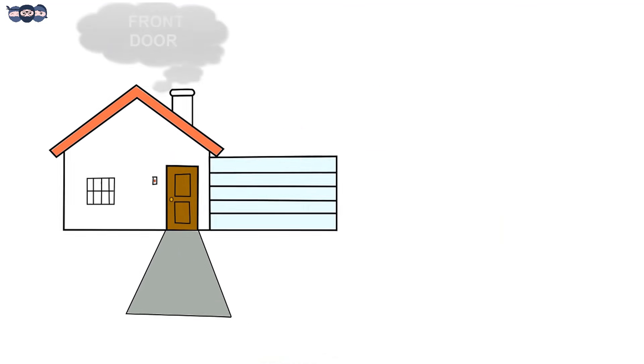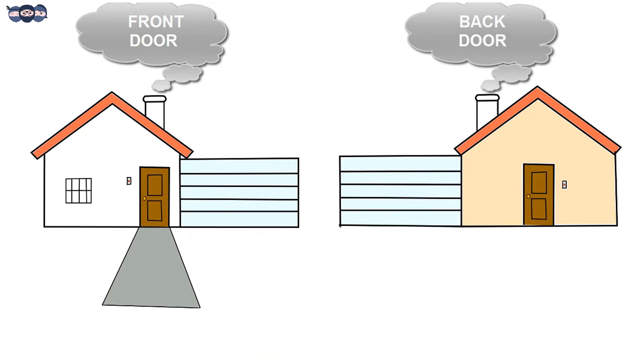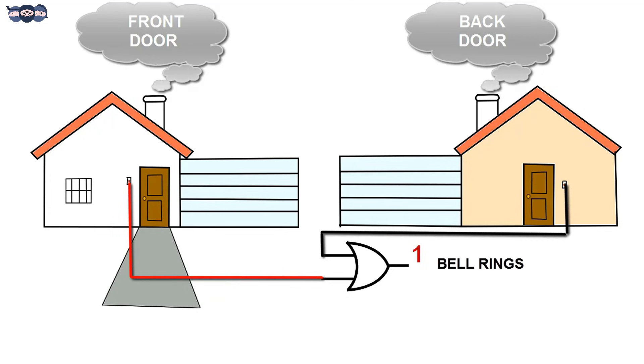When a house has a front door and a back door, guests can arrive at any door. In the event when either the front door or the back door bell is pressed, the bell rings indicating that the guest has arrived.